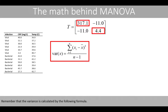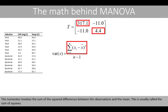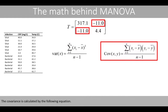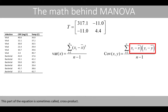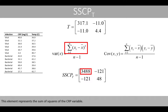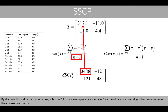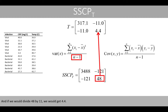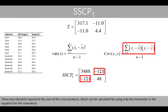Remember that the variance is calculated by the following formula. The numerator involves the sum of the squared differences between observations and the mean — this is usually called the sum of squares. The covariance is calculated by the following equation, where this part of the equation is sometimes called the cross-product. If we calculate the sums of squares and cross-product matrix for the total variation, this element represents the sum of squares of the CRP variable. By dividing this value by n minus 1 — which is 11 in our example since we have 12 individuals — we get the same value as in the covariance matrix. These two elements represent the sum of the cross-products, which can be calculated using only the numerator in the equation for the covariance.